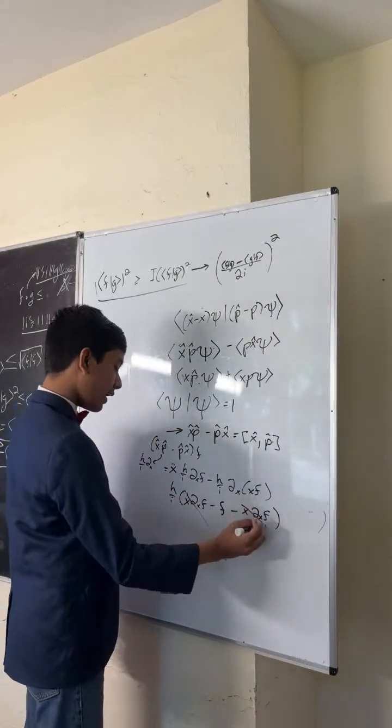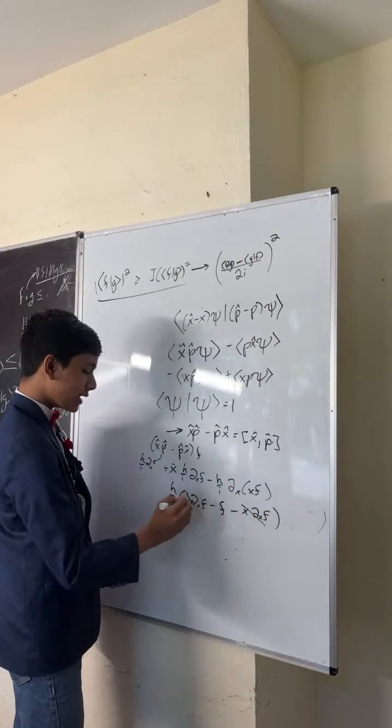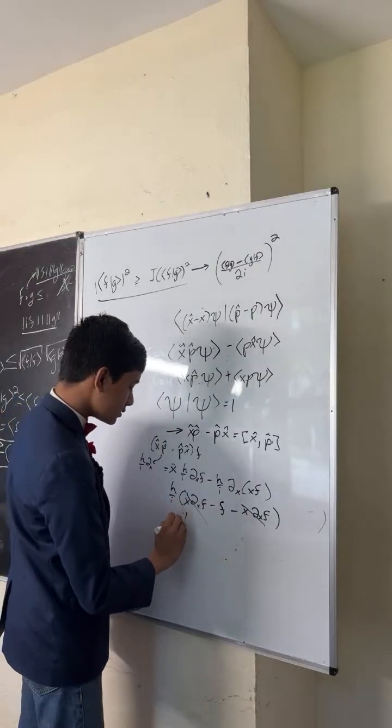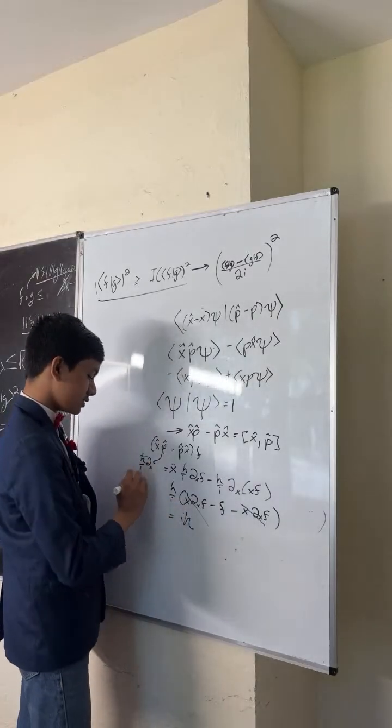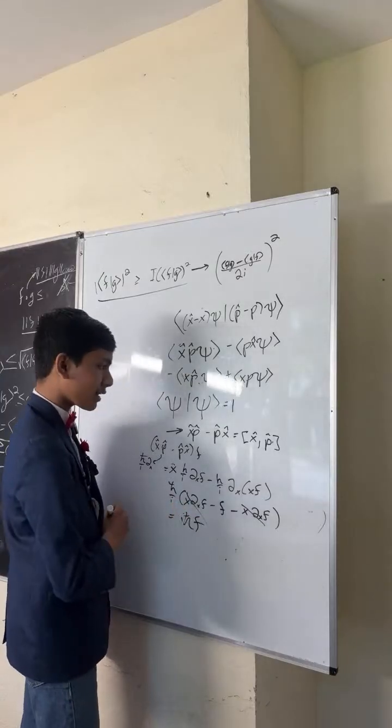And so you cancel these two out and you get that it's just, well, minus 1 over i is i, so you get that this is i - oh this is h-bar - you get i h-bar f, which means that this guy on top is just i h-bar.